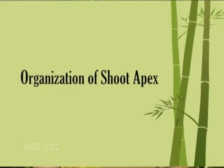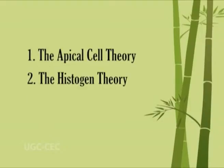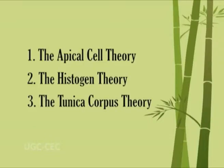Several theories have been put forward to explain and interpret the mode of growth and organization of the shoot apical meristem. These theories are the apical cell theory, the histogen theory, and the tunica-corpus theory.